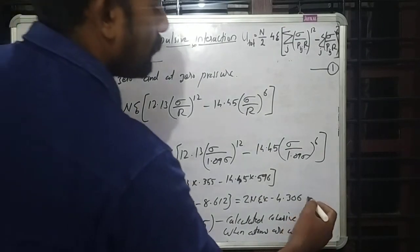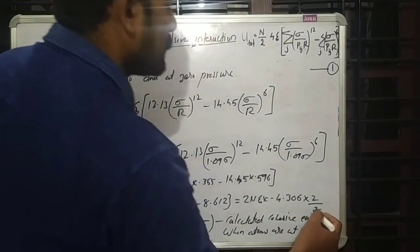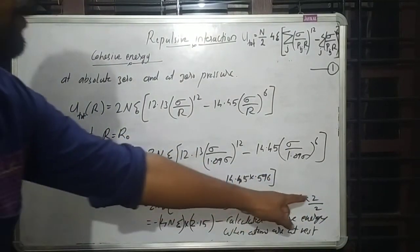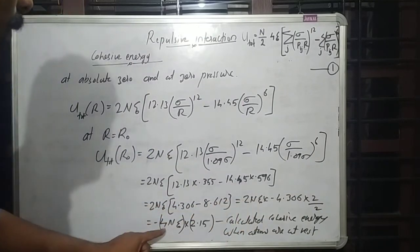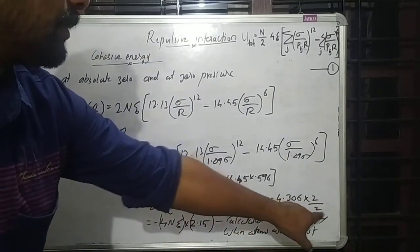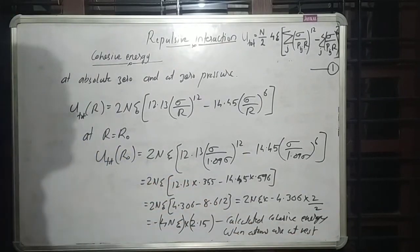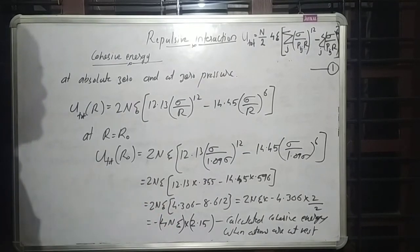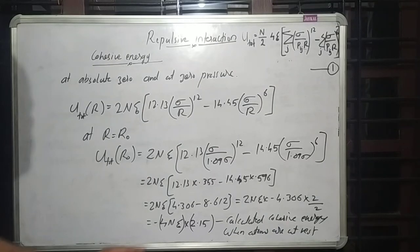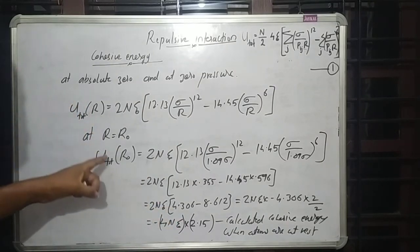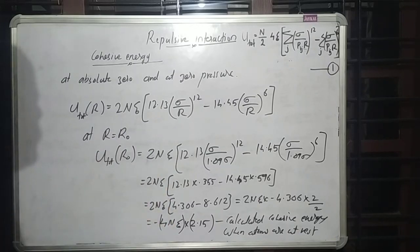Multiplying and dividing by 2, we get minus 4N epsilon times 2.15. This is the calculated cohesive energy when atoms are at rest for FCC structure. For different atoms the value of epsilon differs, so we use experimental data for epsilon. The total energy at R equals R naught is minus 4N epsilon times 2.15.